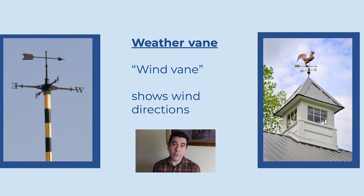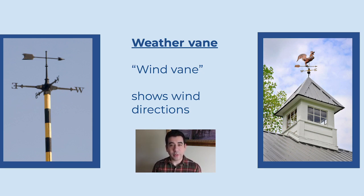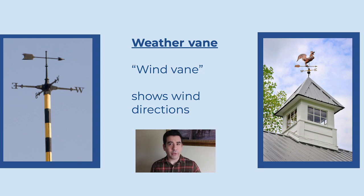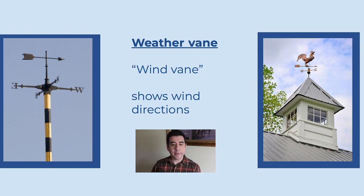What I really like about wind vanes is that a lot of times you'll see animals — like metal or plastic animals — that are attached to it. If you look at this slide, you can see there's a chicken. Not a real chicken, but a metal chicken that's attached to it. And then there will be an arrow that points to north, east, south, or west, so that we know what direction the wind is blowing in.